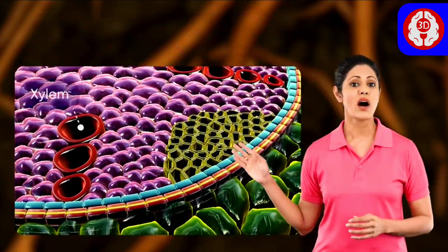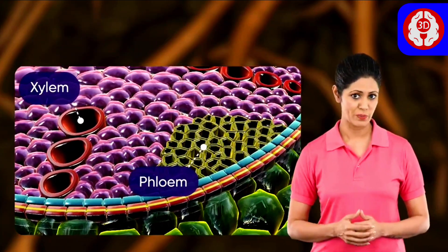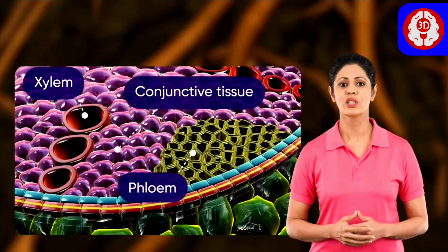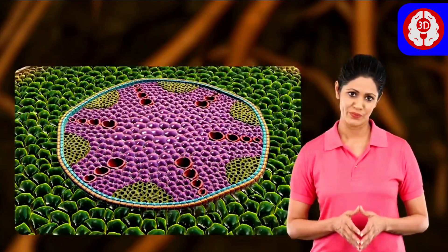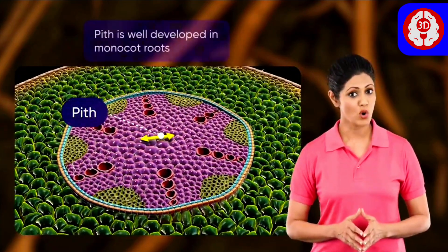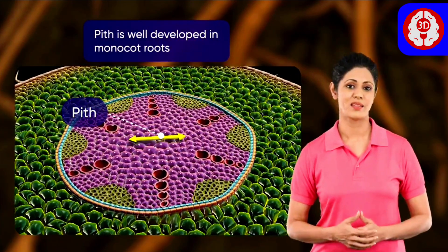The tissue found between the xylem and the phloem is called the conjunctive tissue. The central core is known as the pith.